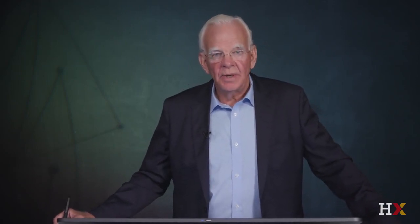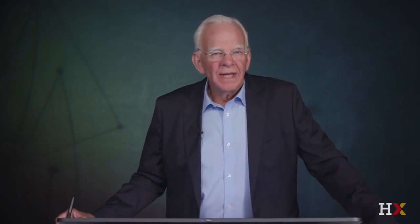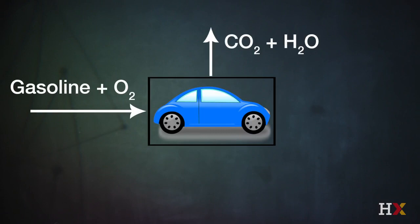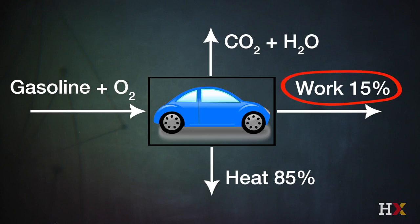This story has another important aspect. We ran an experiment where we added gasoline and oxygen to produce heat. But suppose we put that gasoline into an automobile engine. We're combining gasoline and oxygen, producing CO₂ and water — we're producing heat, but we're also producing work. Only 15% of that chemical energy going into the engine comes out as usable motive force driving the automobile forward.